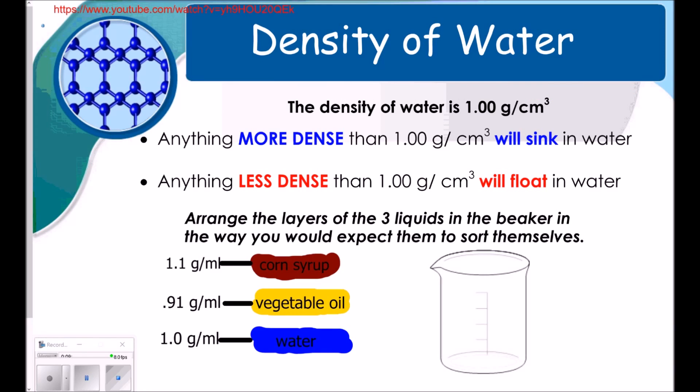Okay, now I've reached the bottom of page 2 in your notes. But I want to add one last thing about density. The density of water is 1 gram per cubic centimeter. Anything more dense than 1 gram per cubic centimeter will sink in water. Anything less dense will float.